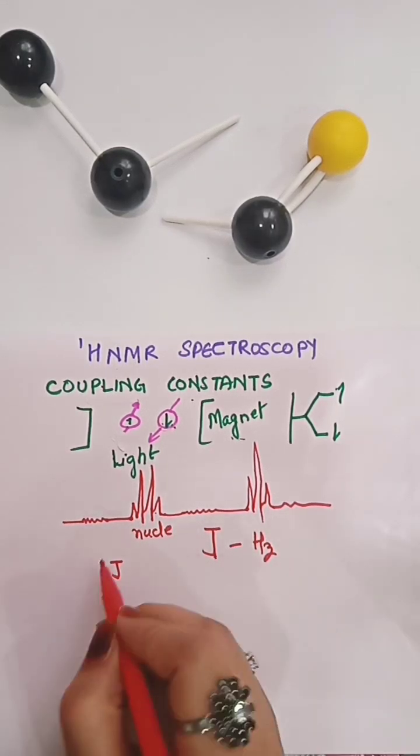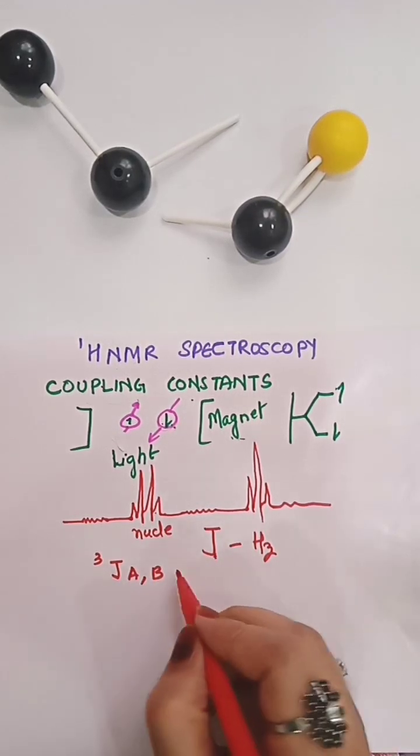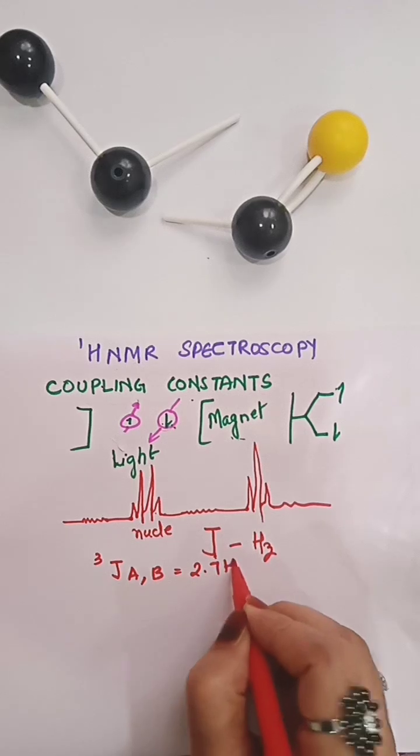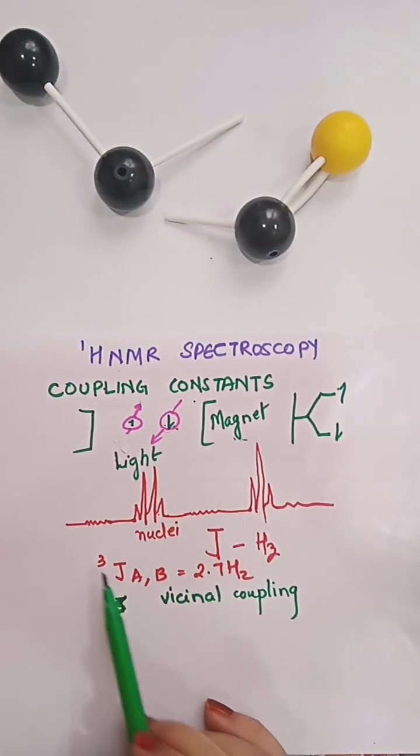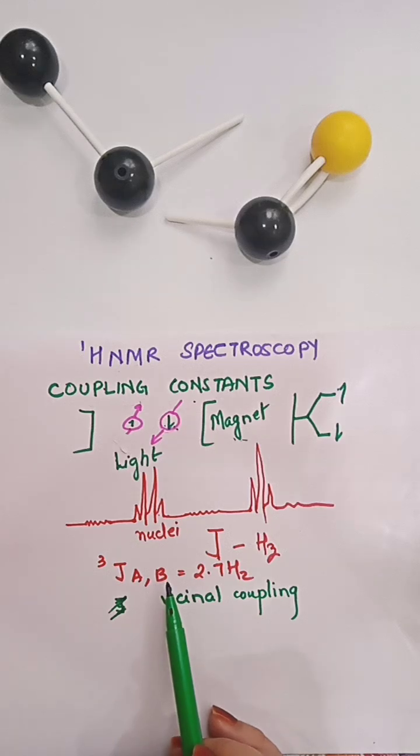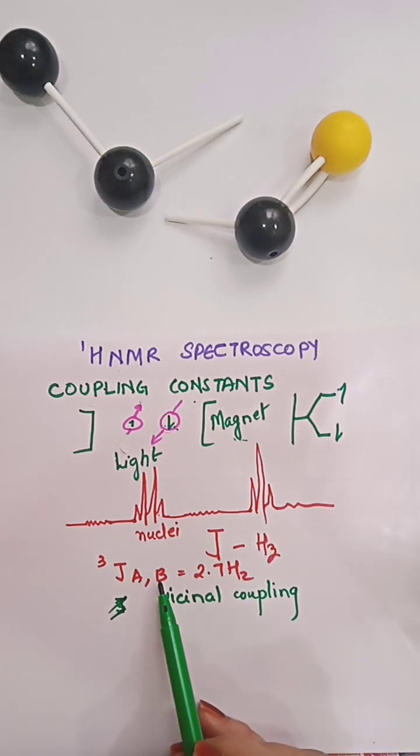We write it J3 A comma B equals 2.7 Hertz. When we write like this, J3 AB, it represents a coupling of 2.7 Hertz between nuclei A and B which is separated by three intervening bonds.